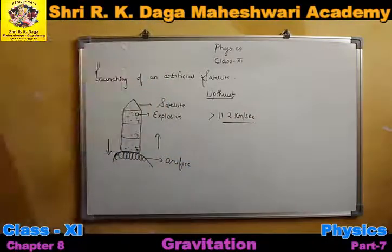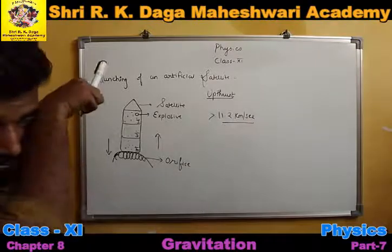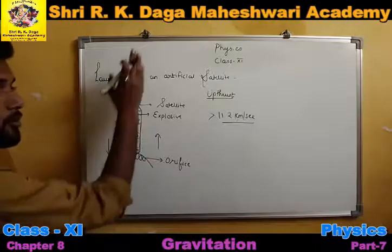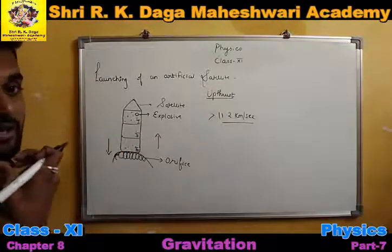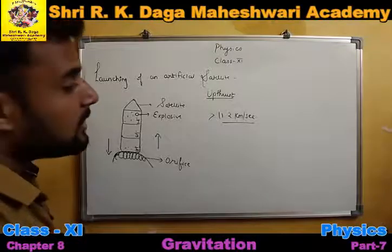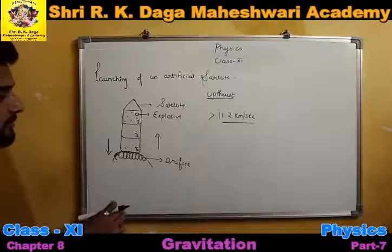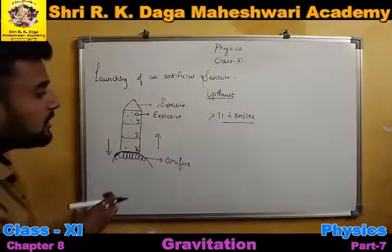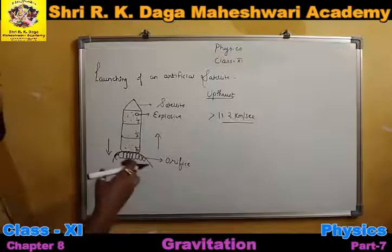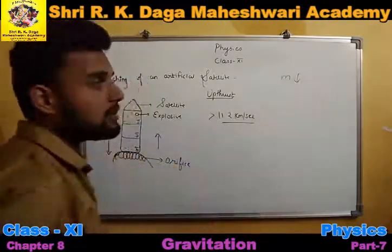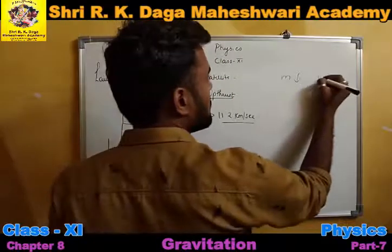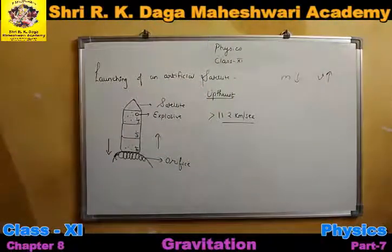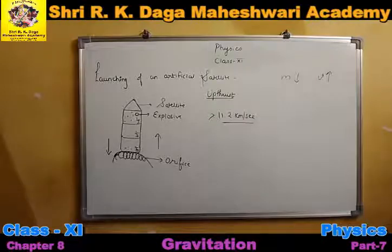When we give the rocket such a high velocity, after a certain point it can cross Earth's gravitational field. Also, the law of conservation of momentum is being followed here — as gases keep ejecting, each chamber separates, reducing the rocket's mass. Since total momentum is always conserved, as mass decreases, velocity keeps increasing.